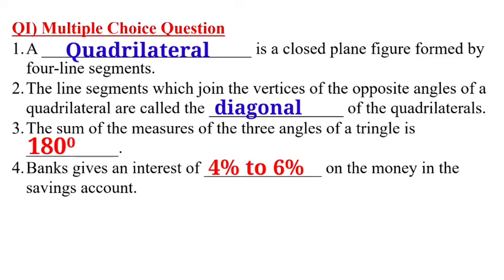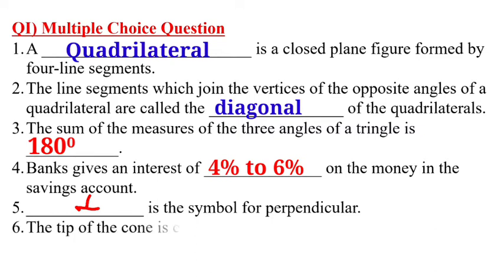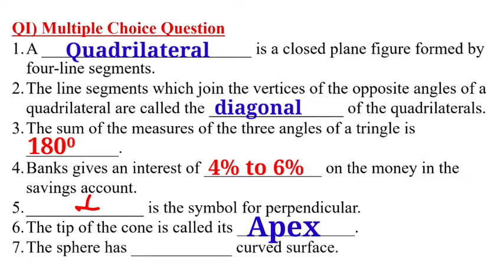The fifth one is given: dash is the symbol for the perpendicular. This is the symbol for the perpendicular. The sixth one: the tip of the cone is called its dash. The tip of the cone is called its apex.